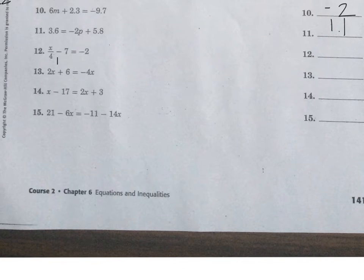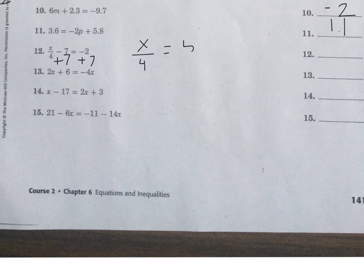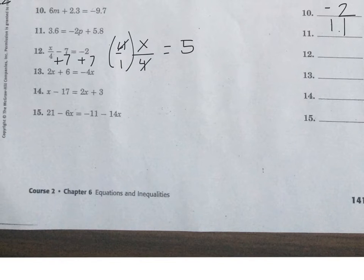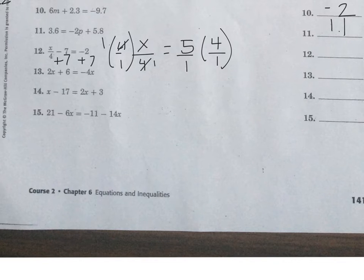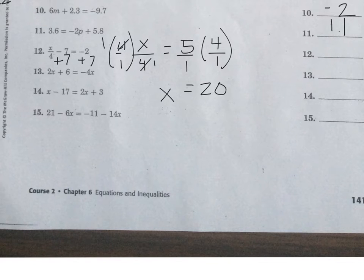For number 12, you first need to add 7 to both sides, giving x over 4 equals 5. Then multiply by the reciprocal, 4 over 1 — the common factor cancels, and you have x equals 5 times 4, which is 20. The answer to number 12 is 20.